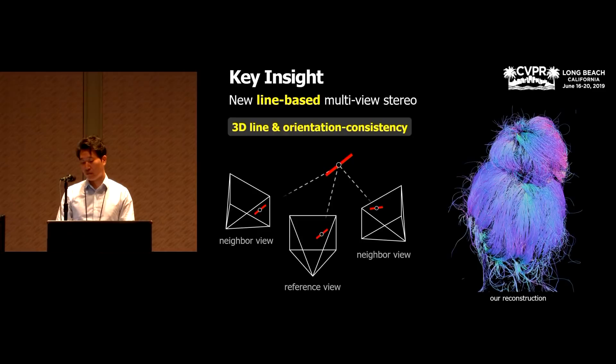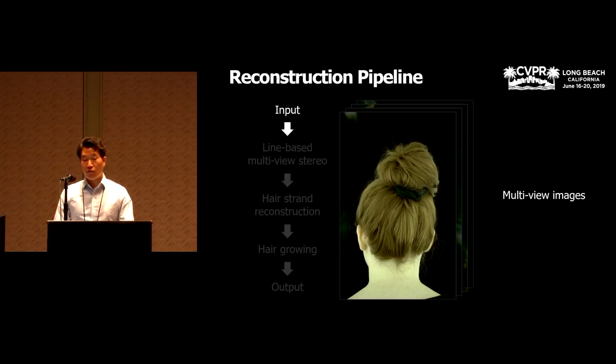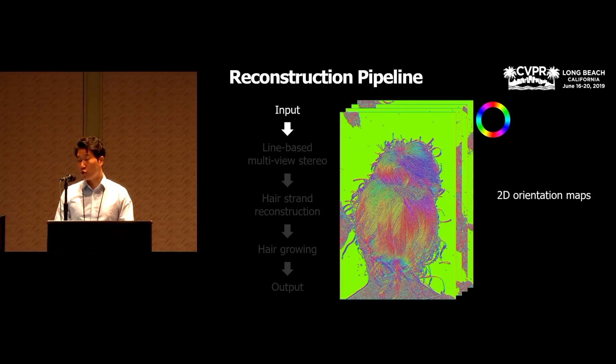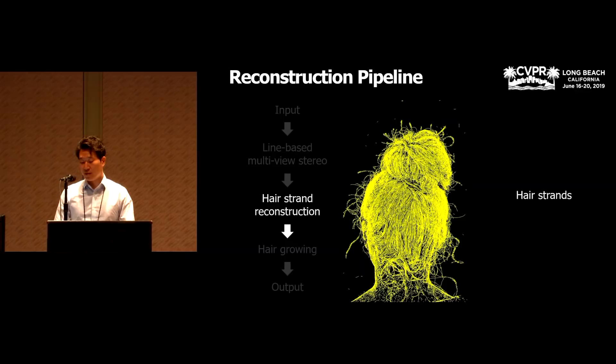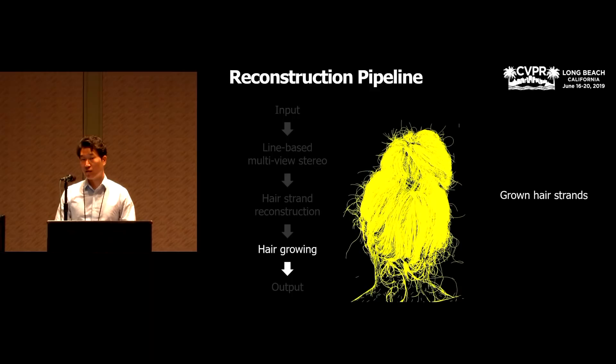Using the 3D line structure, we design a novel cost function based on the orientation consistency. And this line-based multi-view stereo is the key contribution of this work and makes it possible to reconstruct hair strands with unprecedented accuracy. Here's the overall reconstruction pipeline. It starts from multi-view images and their 2D orientation maps. By using our new line-based multi-view stereo, we get a point cloud of 3D line segments. From the point cloud, we reconstruct hair strands. This step is analogous to surface reconstruction methods in traditional approaches and it is also one of the key contributions in this work.